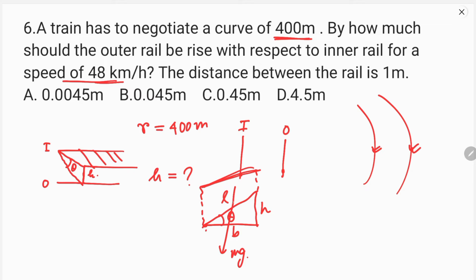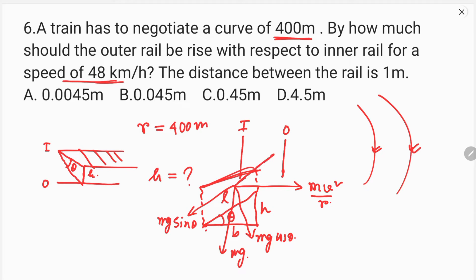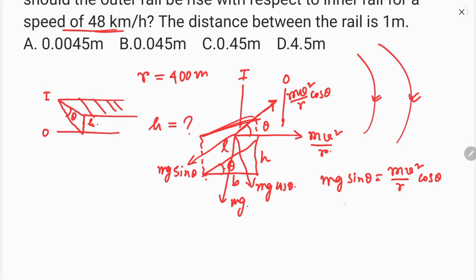The normal force component gives mg cos theta, and the centripetal component gives mg sin theta equal to mv squared by r into cos theta. The masses cancel, giving g sin theta equal to v squared by r, so tan theta equals v squared by rg.